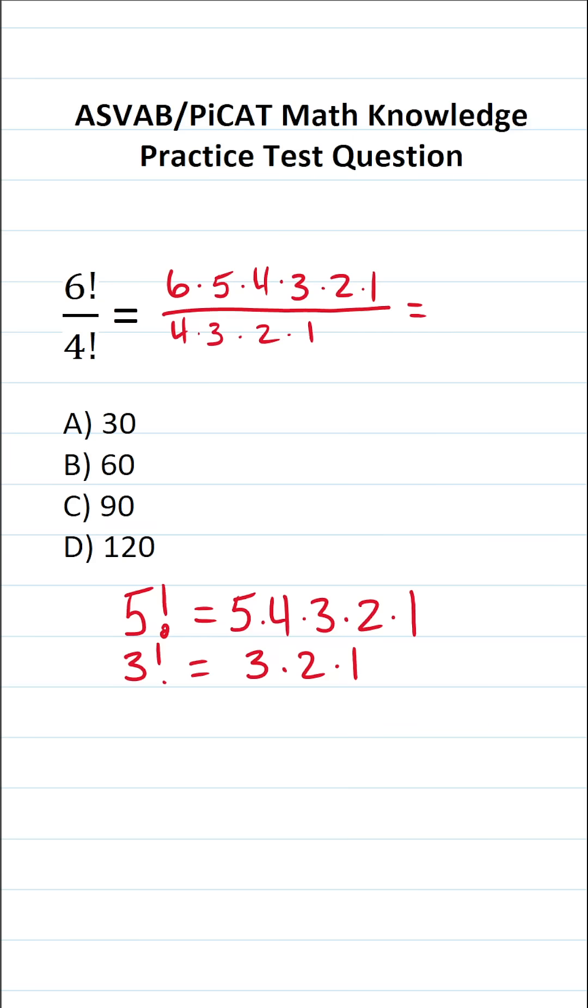Now at first glance, this seems like a lot of work to do, but as it happens, we can cross out corresponding values in our numerator and denominator. So we can cross out these 4s, these 3s, these 2s, and these 1s.